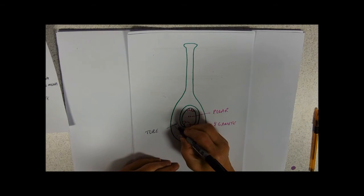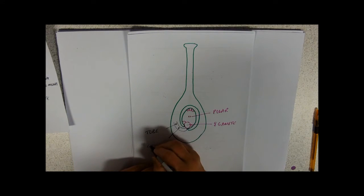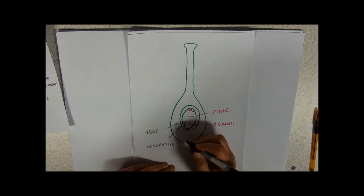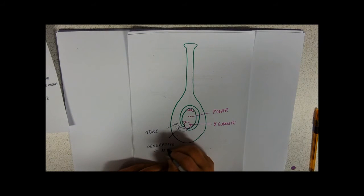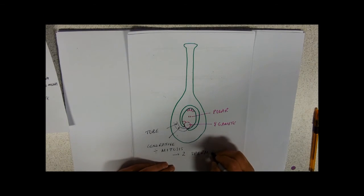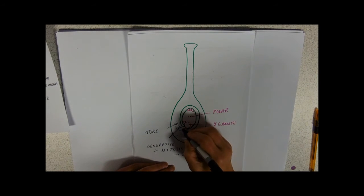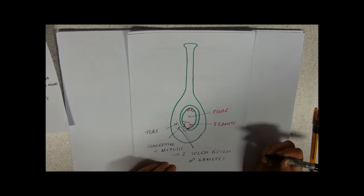And we had a generative nucleus. Now plants do this really odd thing called double fertilisation. So this one is going to divide by mitosis so that we get two sperm nuclei. So these are the male gametes proper. By the time we get down to do the fertilisation, we've got these two sperm nuclei.